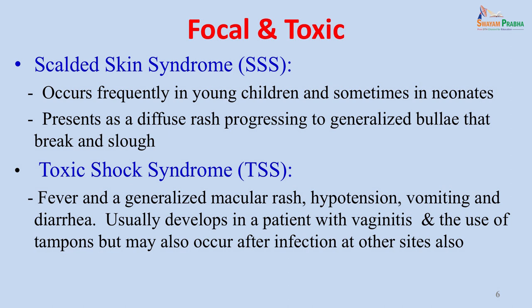Focal and toxic manifestations are usually toxin-associated and they manifest as scalded skin syndrome or toxic shock syndrome. Scalded skin syndrome occurs frequently in young children and sometimes in neonates, presenting as a diffuse rash progressing to generalized bullae that break and slough — the child looks as if he has suffered burns. Toxic shock syndrome presents with fever, a generalized macular rash, hypotension, vomiting and diarrhea, and usually develops in a patient with vaginitis after the use of tampons, but may also occur after infections at other sites.